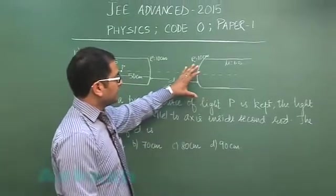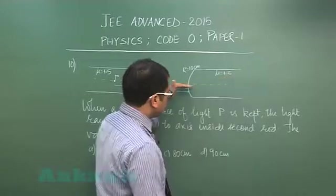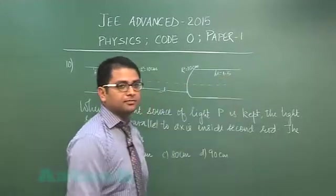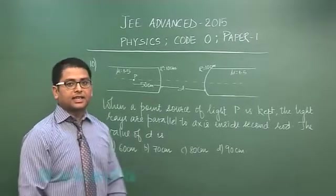That means finally the light rays which would emanate inside the second rod has to be parallel. For that initially we can make some logical guess.